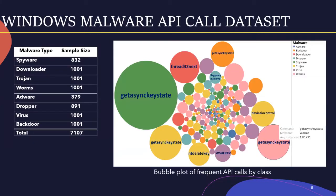The Windows Malware API Call dataset is a public malware dataset containing 7,107 samples of eight classes: AdWare, Backdoor, Dropper, Downloader, Trojan, Spyware, Virus, and Worms. For this dataset, API calls represent a system call on the Windows operating system occurring during the runtime of the malicious file. This dataset does not include benign samples. The bubble plot created in Tableau shows the most frequent API calls per class. The labels in the bubbles represent the API calls, and the size of each bubble indicates the average number of instances containing a related API call. For example, GetAsyncKeyState is the most frequent call for Spyware, Worms, Trojan, and Backdoor.